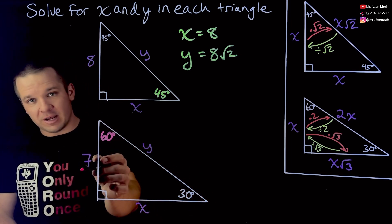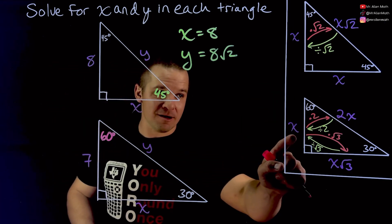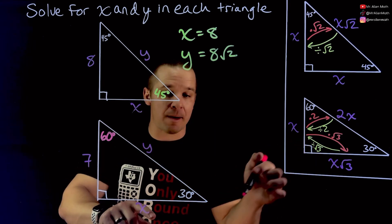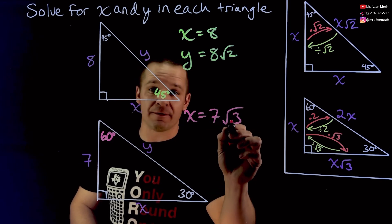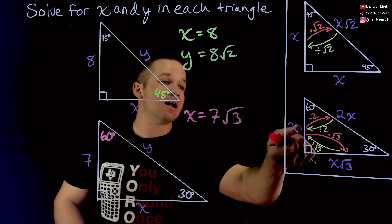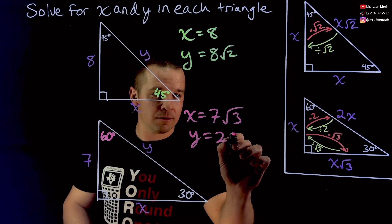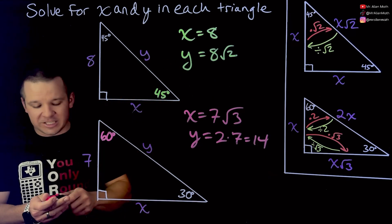Well, since I have the side across from my 30, that's the easiest one to work with. If I look over here to get to my medium-sized side, which is this guy here across from the 60, I'd multiply by root 3. So now X is going to equal 7 times root 3 or just 7 root 3. And then to get to my hypotenuse, my longest side, I'd have to double it. So Y is going to equal 2 times 7, which is 14.